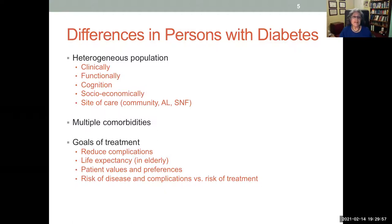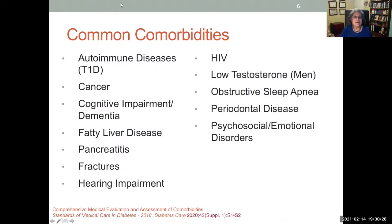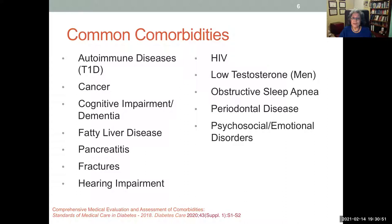When you see one person with diabetes, you really see one person with diabetes — they are a heterogeneous population, both clinically, in functional ability, cognitive status, socioeconomically, and by site of care. They have multiple comorbidities including autoimmune disease, cancer, cognitive impairment, liver disease, pancreatitis, higher risk of fractures, hypogonadism, sleep apnea, periodontal disease, and a myriad of psychosocial and emotional disorders. Goals of treatment can vary from reducing complications to comfort care at end of life, so you must consider patients' values and preferences.